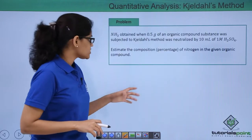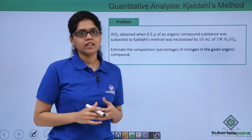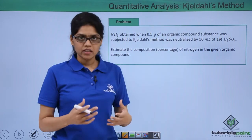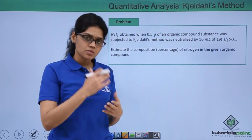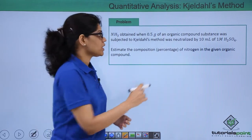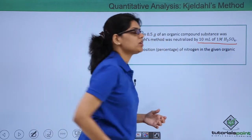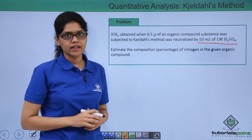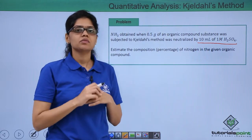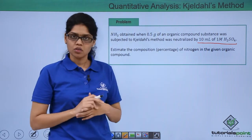In this question we have been given that ammonia obtained when 0.5 gram of an organic compound is subjected to Kjeldahl's method was neutralized by 10 ml of 1 molar sulfuric acid. We need to estimate the percentage of nitrogen in this particular organic compound.